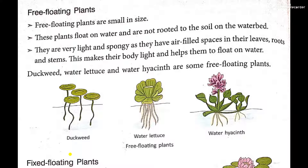Examples of free floating plants are duckweed, water lettuce, and water hyacinth. You can see these three plants are flat at the top and their roots or stems float in the water; their size is also small. In the case of water lettuce, leaves are big but roots and stems are very thin and freely floating. Water hyacinth stems are very light in weight. Free floating plants have air-filled spaces in their roots, stems, and leaves, and their roots are not attached to the water bed.